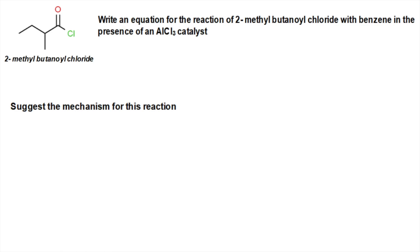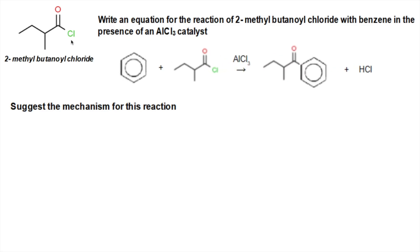We've got an acyl chloride. Basically, the hydrogen will come off the benzene ring and combine with the chlorine from the acyl chloride. The acyl group will go onto the benzene ring and we'll get hydrogen chloride as well. There's the equation for that.